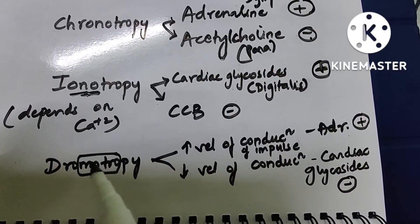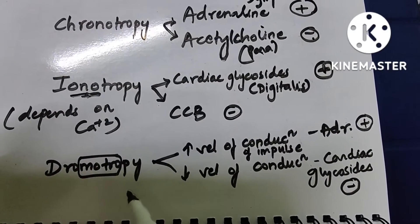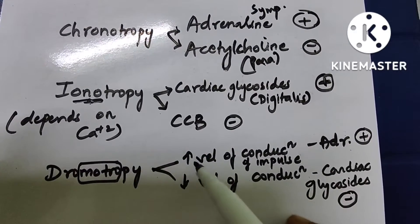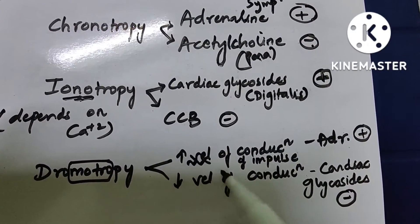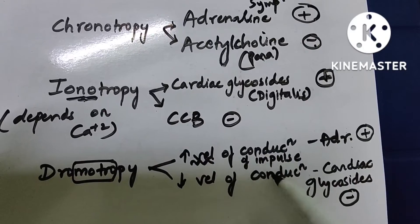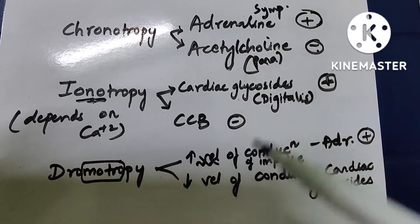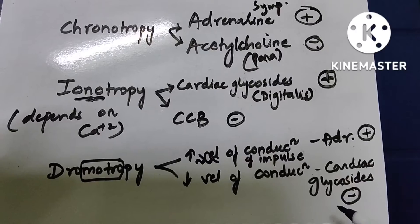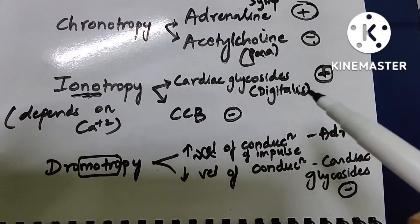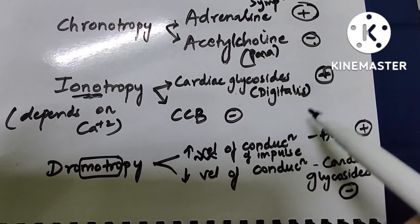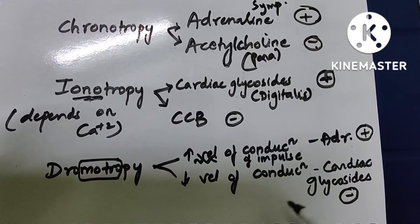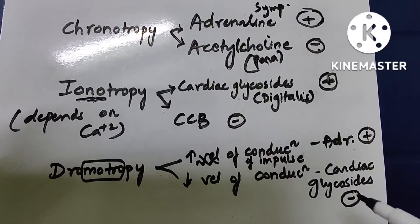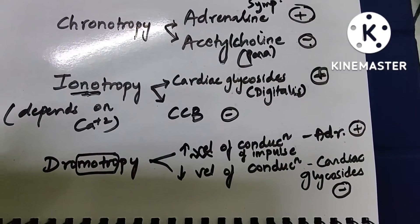Now comes dromotropy — this is the metro mnemonic, so it relates to running of the impulse, meaning velocity. Increased velocity of conduction of impulse is by adrenaline, that is sympathetic, and decreased velocity of conduction is by cardiac glycosides. Cardiac glycosides increase the force of contraction but decrease the velocity of conduction. Remember that point.